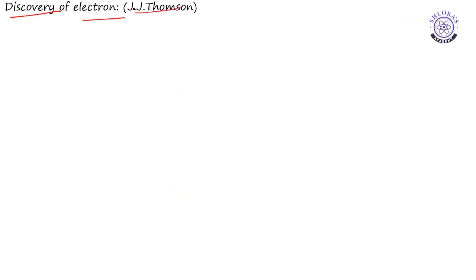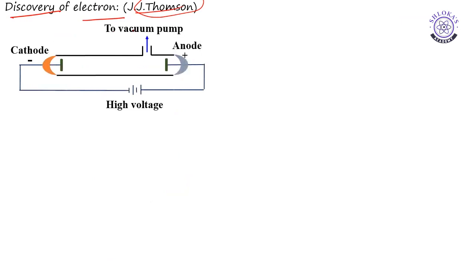Next, first let us discuss about discovery of electron which was done by J.J. Thomson. For the discovery of electron he has used a discharge tube which is also called as cathode ray tube.